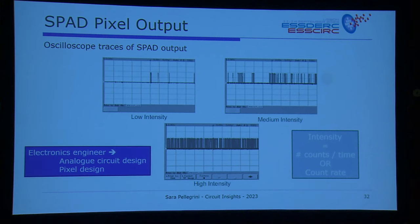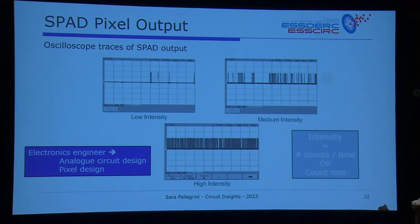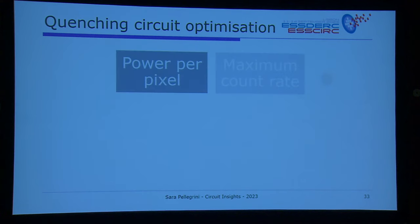How do electronics engineers come into this? The design of these circuits is the core role. You can build a lot of complexity into the pixel — for example, an active recharge feedback loop to actively switch off the SPAD. There is a lot of clever circuit development you can implement, and these are all electronics engineer jobs.